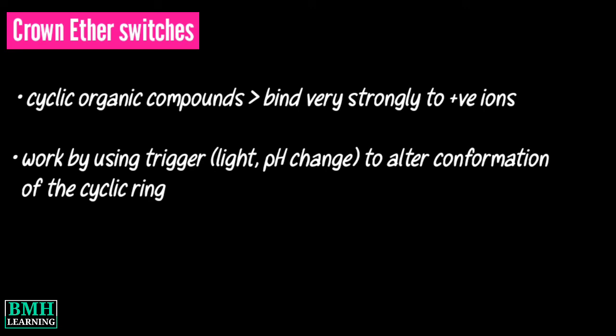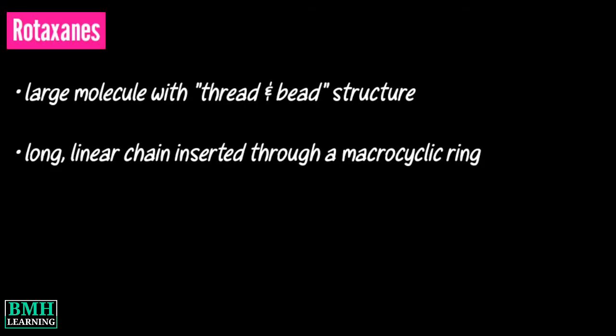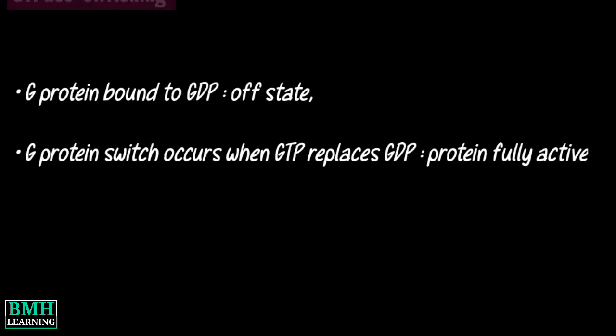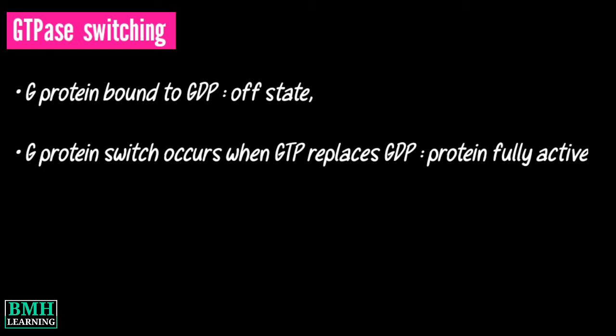Rotaxanes. A rotaxane is a large molecule with a thread-and-bead structure. A long linear chain is inserted through a macrocyclic ring so that the ring can slide freely along the length of the chain, and bulky end groups prevent the ring from sliding off.